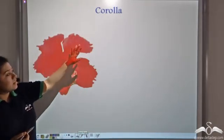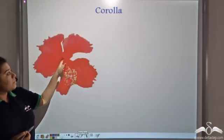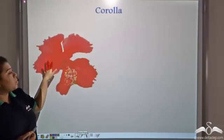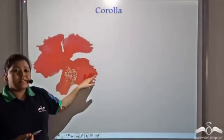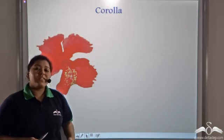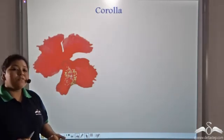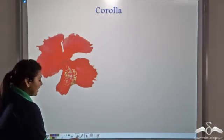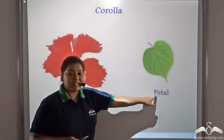Look at this flower. See, this part is known as the corolla. So, what is the corolla made up of? Well, the corolla is made up of individual leaf-like units which are known as petals.